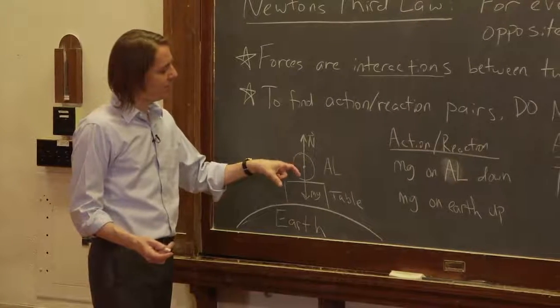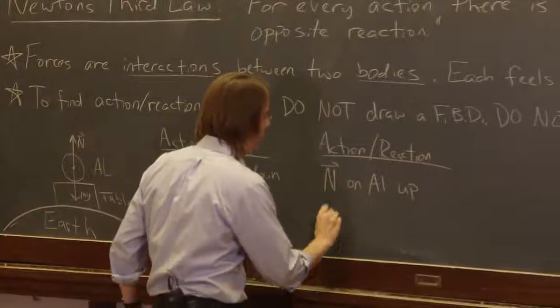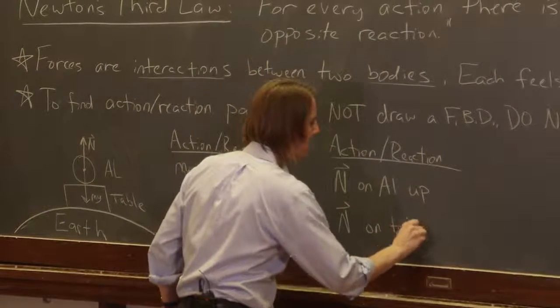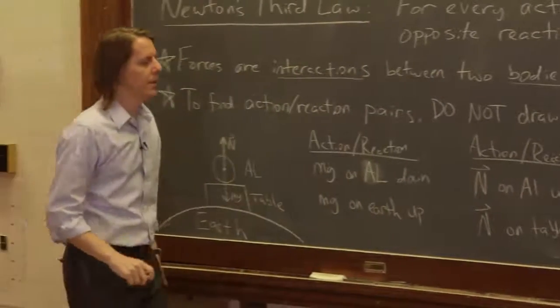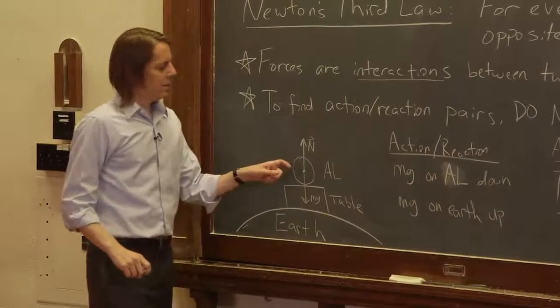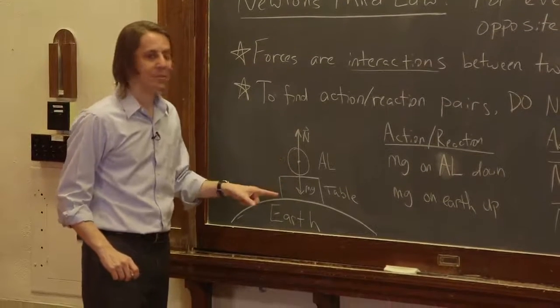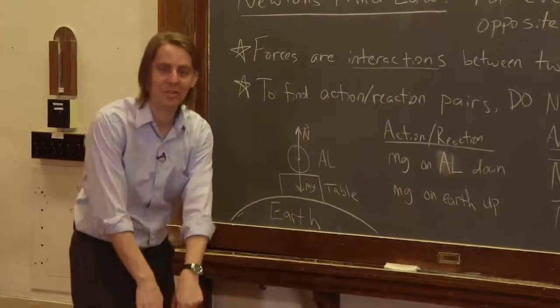It must be that Al is pushing down on the table. So there must also be N on the table down. It's not Mg - Mg is the force on Al, not on the table. N is the force on the table, the force of Al pushing down on the table.